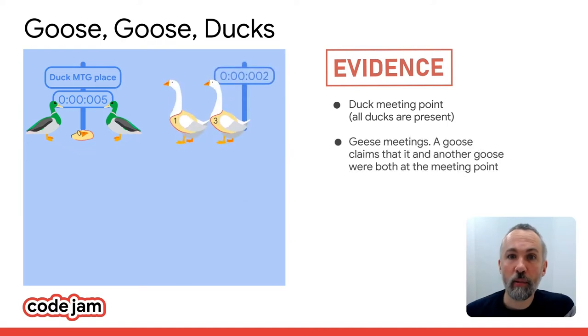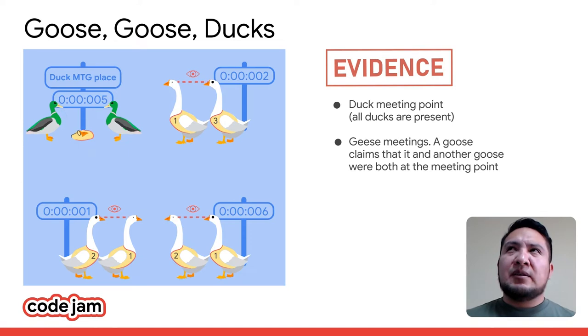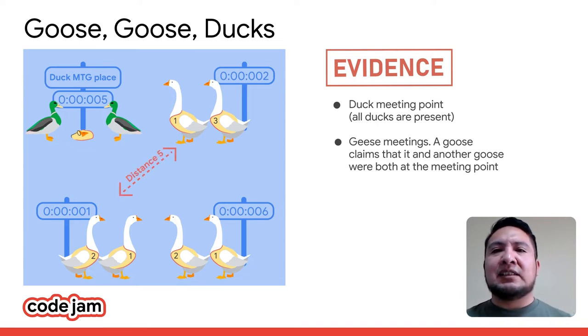Second, we have pieces of evidence provided by the participants. A participant of a conference can tell us that together with another participant, they were present at a specific time and place. Are all these pieces of evidence true? How did Goose One get from one corner to another so quickly? I thought each bird covers only one meter of distance in one second.